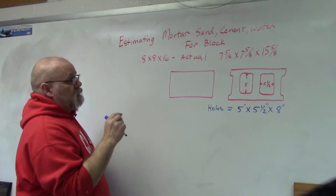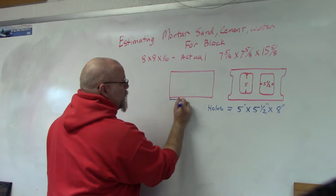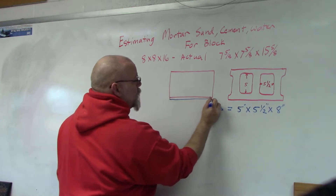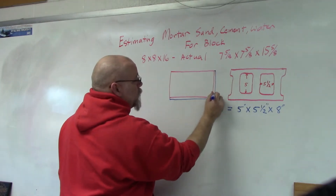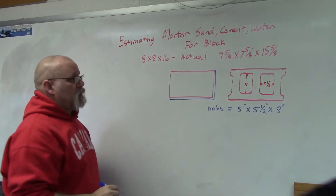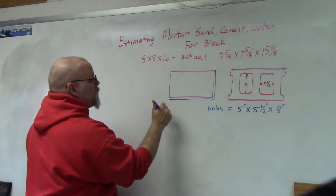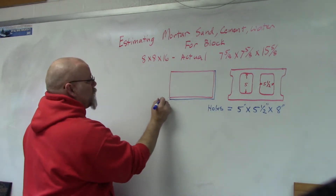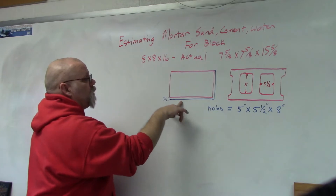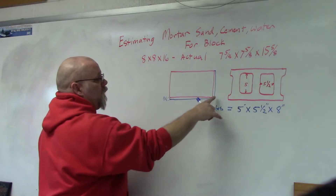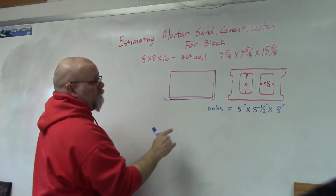They give you a 3/8 of an inch joint for your block. So this 3/8 of an inch will be the thickness of your joint. You lay your bed joint and your head joint — both are going to be 3/8 of an inch thick.